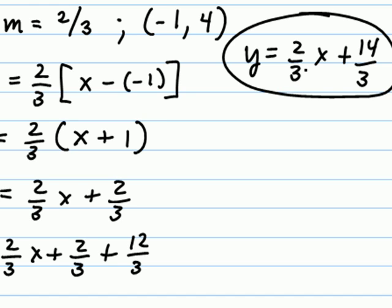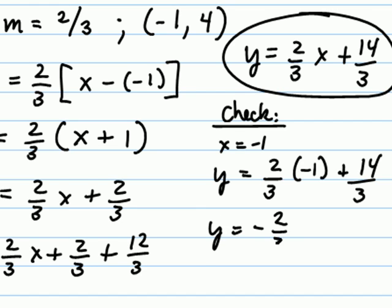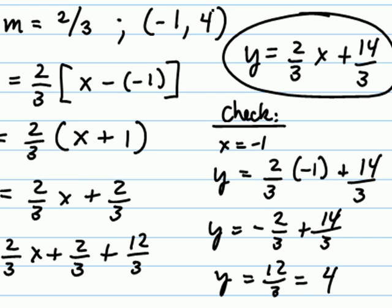Again, we can check because the slope here is obviously 2 thirds, matching our original question. We just need to verify that if x is negative 1, we really do get 4 for y. Simplifying, we do see that we get 12 thirds for y, which is 4, completing the check.